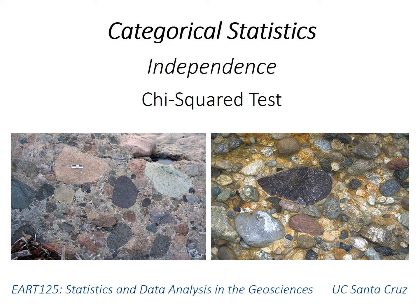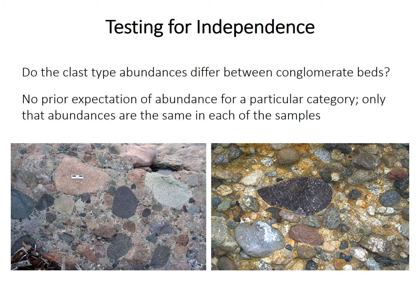This video introduces the chi-squared test for independence, which is the final categorical test we'll cover in this course. To recap, we test for independence when we have no prior expectation of the counts, but we want to know if the abundances differ significantly among different samples — for example, if we want to test if the abundance of rock types differs between different beds of conglomerate.